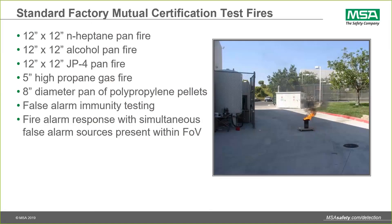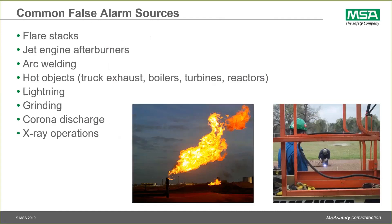To talk a little about false alarms: they're out there and can be surprising. In the case of a flare stack, it actually is a fire — the point is you don't want the detector to see that fire; you want it to detect the fire it must see. False alarm sources abound in industrial job sites. These include jet engines at airports, arc welding, truck exhaust, boilers, turbines, reactors in oil and gas, lightning, grinding metal with sparks, electrical transformer Corona discharge, and x-ray operations in pipeline inspection. It's important to identify and consider these false alarm sources during the design phase of your project.